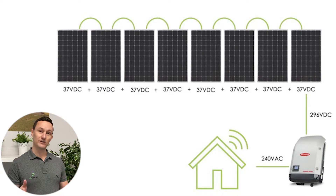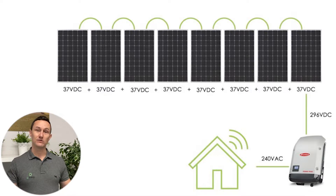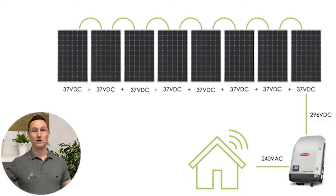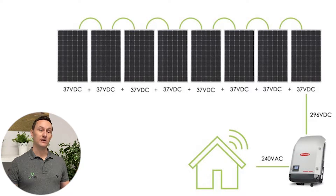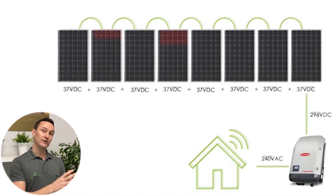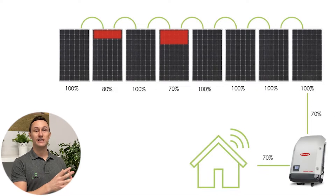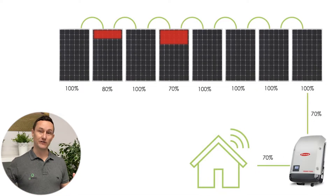There is an article on our website that explains this further, but basically a string inverter means that you've got a string of panels connected together — perhaps five or up to about 12 panels in a string configuration. What that means is, if one of those panels in that string is affected by shade or debris, the whole string of panels is going to be affected by that weakest link.